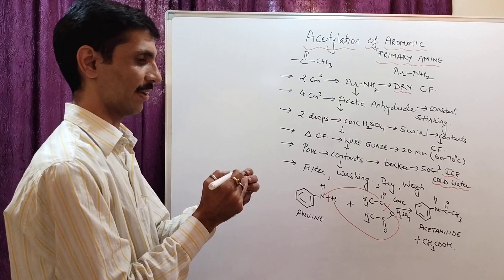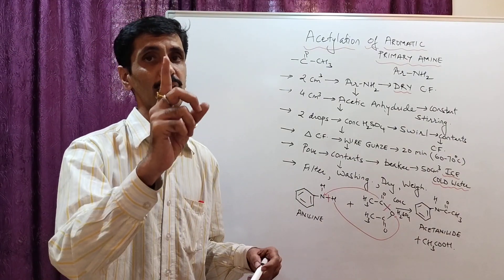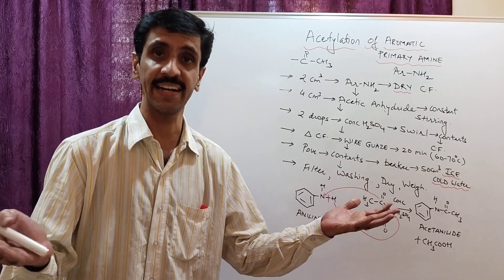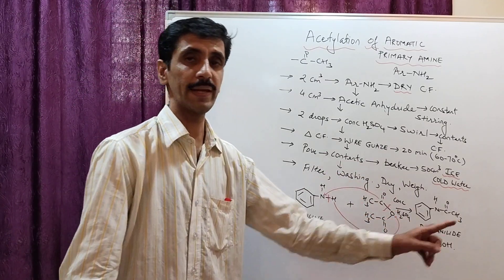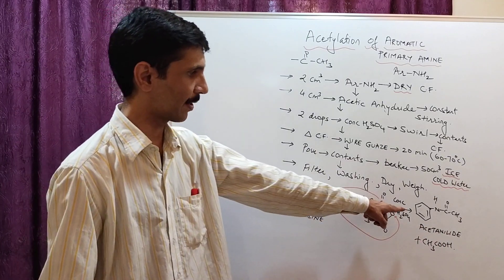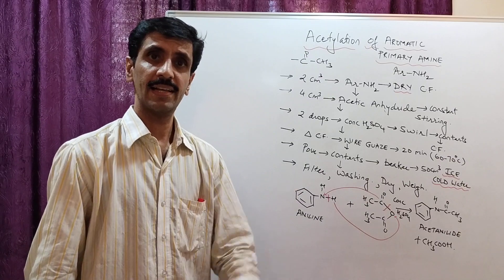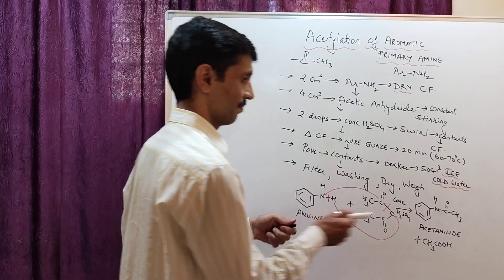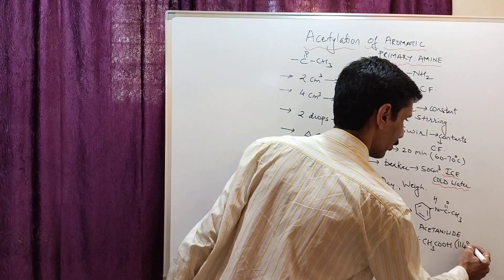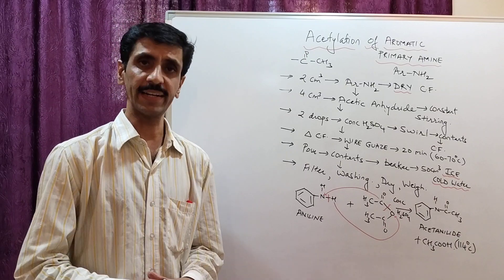So it's not an addition product. You can just check it out over here. It's not an addition reaction. In addition reaction, we get only one product which we call it as an adduct. So here, the acetic acid is going to be eliminated. And we get the major product as acetanilide. It's a white solid. The melting point of which is 114 degrees Celsius. The melting point is 114 degrees Celsius. And it's a white solid.